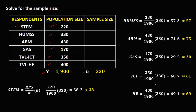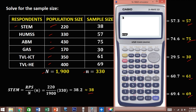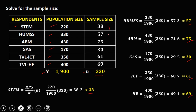For HE, the population size is 400: 400 divided by 1900 times 330 gives 69.4, approximately 69. So the sample sizes for every respondent group are: STEM=38, HUMS=57, ABM=75, GAS=30, ICT=61, HE=69. Adding all of these gives a total of 330. Note that sometimes the sum can be plus or minus 1 due to rounding, so it could be 329 or 331.